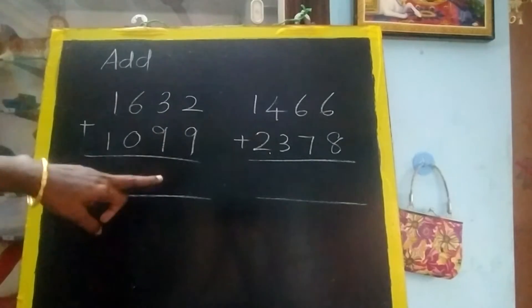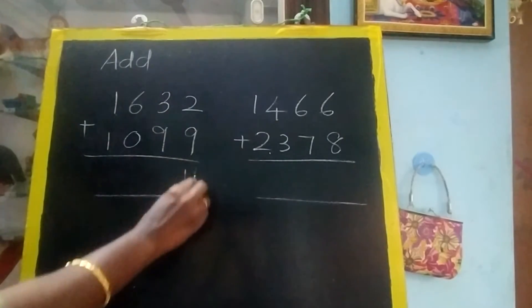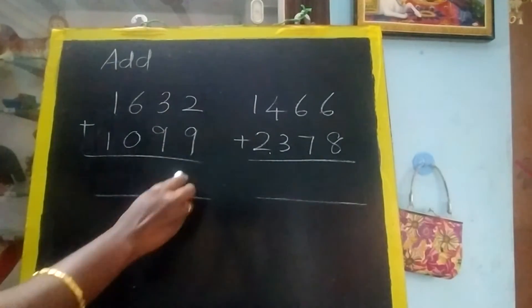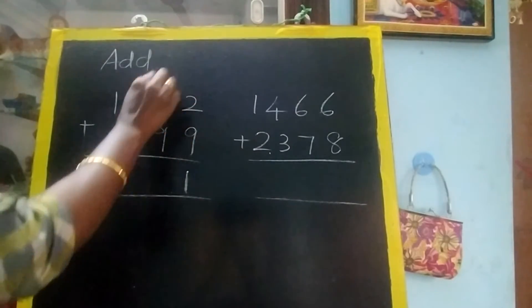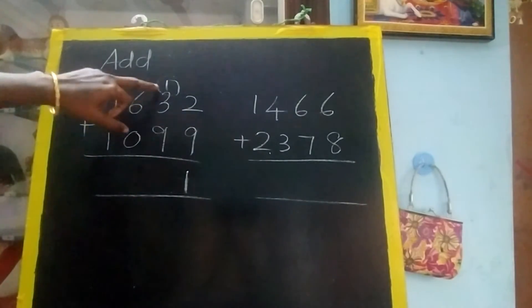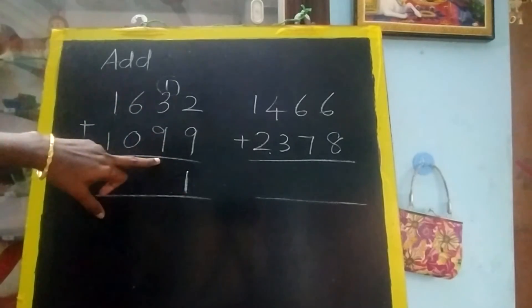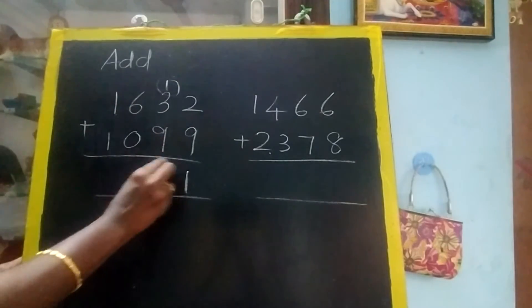We cannot write eleven like this, so this is wrong. Write one here and one carry-over. You should not forget to add this one. One plus three equals four, four plus nine equals thirteen. Again, write three here and one carry-over.